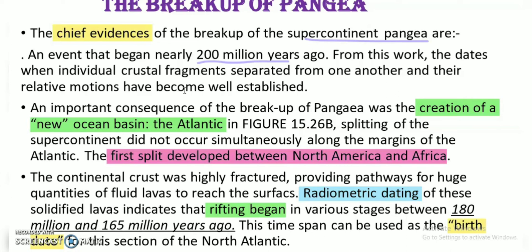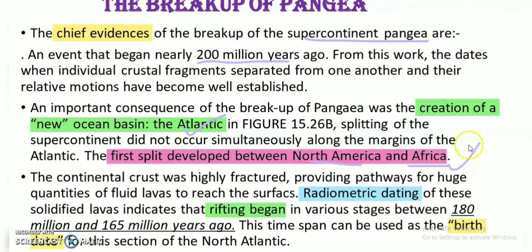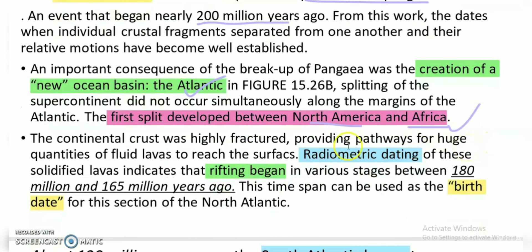The new ocean basin — called the Atlantic, or specifically the North Atlantic Ocean — formed between North America and Africa. Using radiometric dating based on radioactivity, we can see when the rifting started.